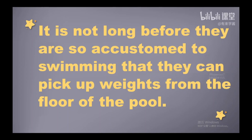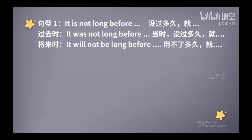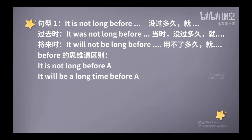反过来，如果before之前发生的事儿持续时间比较长，那么before就表示才。那我们来看这句话当中，It is not long before something happens，这里的before前面是It is not long，时间不长，因此before表示就。It is not long before something happens，就表示没过多久就发生了什么。如果要表达说过了好长一段时间才发生一件事儿，那怎么表达呢？对了，你可以说：It will be a long time before something happens.